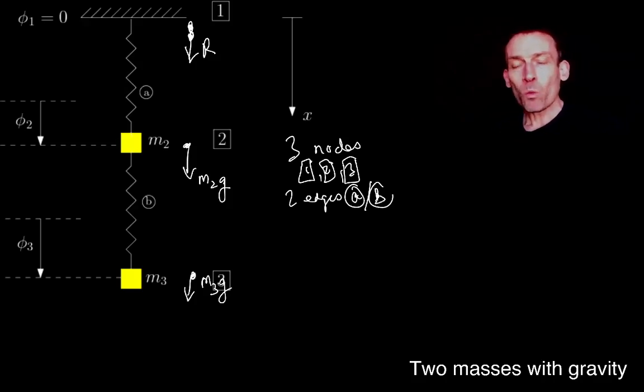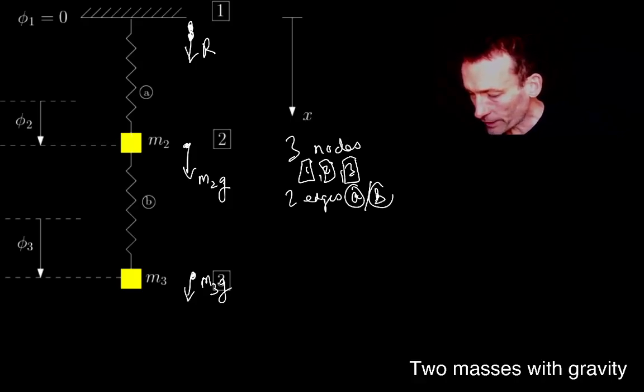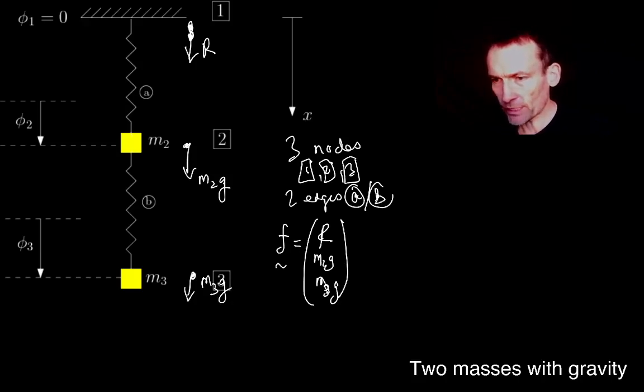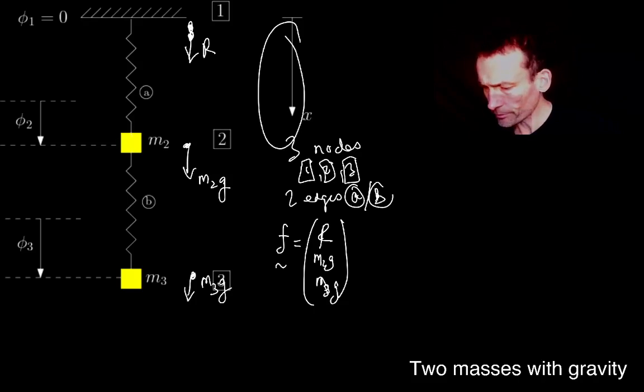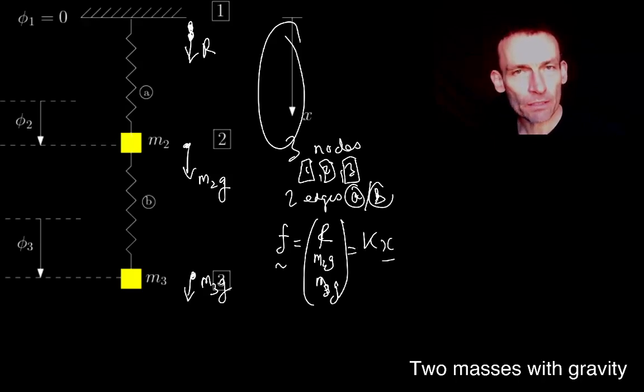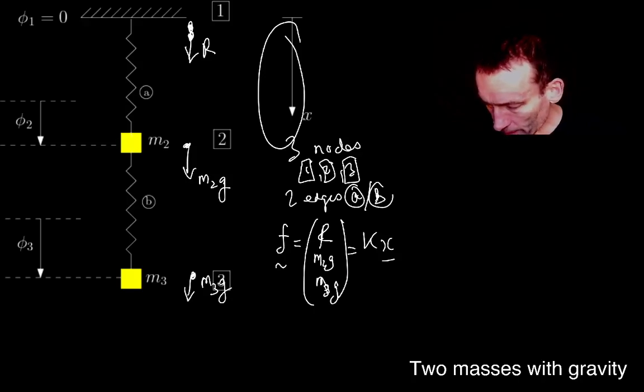Now, we could write down the incidence matrix if we wanted to, but from the last lecture, I already know that F, which is my vector of external forces, which, by the way, we know to be R, M2g, and M3g. By the way, I've taken x, you see, I've taken x to be in the downward positive direction. We know this is equal to the weighted Laplacian times our vector of displacements. That's what I just did in the last lecture.